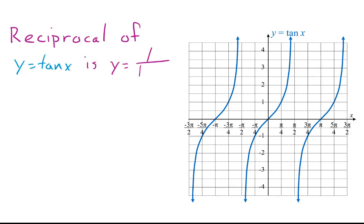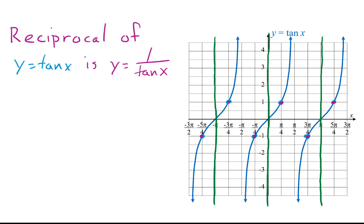Finally, we find the reciprocal for tangent. Here are some points where tangent has y equals 1, so the reciprocal is on the same points. Similarly, where y equals negative 1, 1 over negative 1 is still negative 1, so these are points on the reciprocal. Where y equals 0, 1 over 0 is not defined, so the reciprocal has vertical asymptotes at those values of x. Here are some points where the tangent has y equals 1 half, so the reciprocal has y equals 1 over 1 half, which is 2. Similarly, where the tangent has y equals 2, the reciprocal has y equals 1 over 2. We can sketch curves through these points approaching the asymptotes.